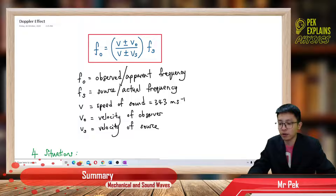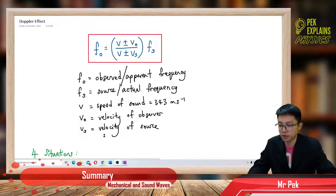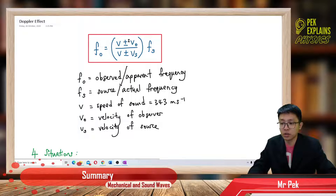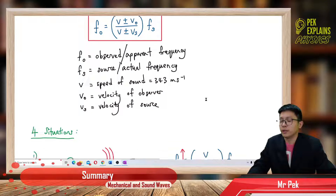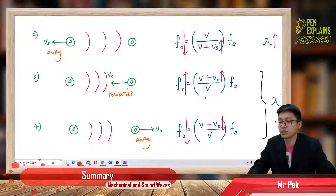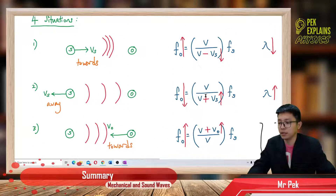The velocity of the observer is always at the top of the fraction, and the velocity of the source is always at the bottom. You must be careful about this sequence.